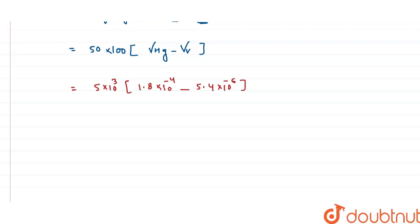After solving this, the final value is 0.873 centimeter cube. So this is the volume of mercury which will overflow from the vessel.